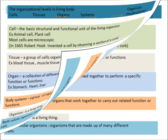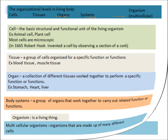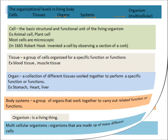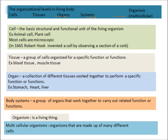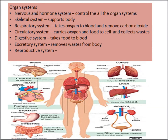The cell is the structural and functional unit of living organisms, and most cells are microscopic. Some organisms are unicellular, but most organisms are made up of a large number of cells — so they are called multicellular organisms. When a group of cells organizes for a specific function, it is called a tissue. Tissues are the next organizational level after cells. A collection of different tissues working together to perform a specific function is called an organ. A group of organs working together to carry out a related function is called a body system.